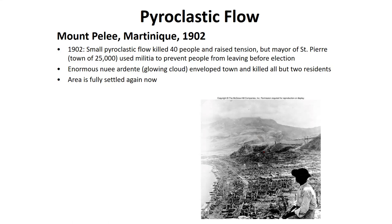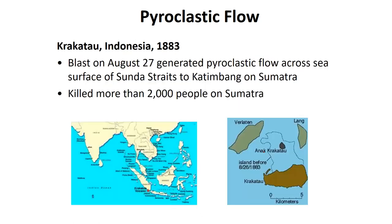This is an example where a smaller event put people on alert, they wanted to leave, but the short-sightedness and selfishness of one person cost all these people their lives. Obviously, today nothing like this would ever be allowed to happen. Another pyroclastic flow occurred in the eruption of Krakatoa in Indonesia in 1883. A blast on August 27th generated a pyroclastic flow that flowed across a small strait of water between Krakatoa and Sumatra, hitting the shores of Sumatra and killing more than 2,000 people.